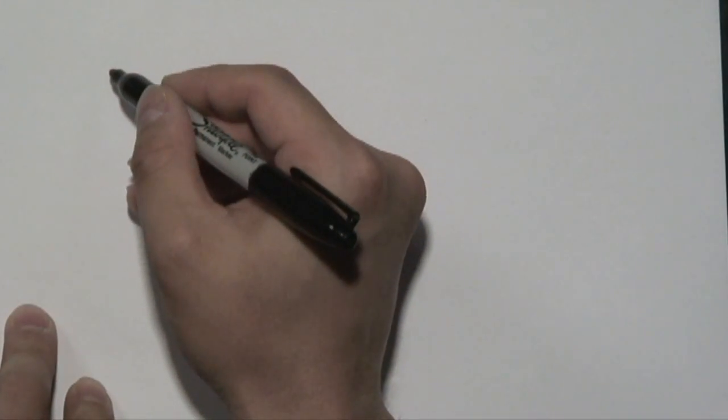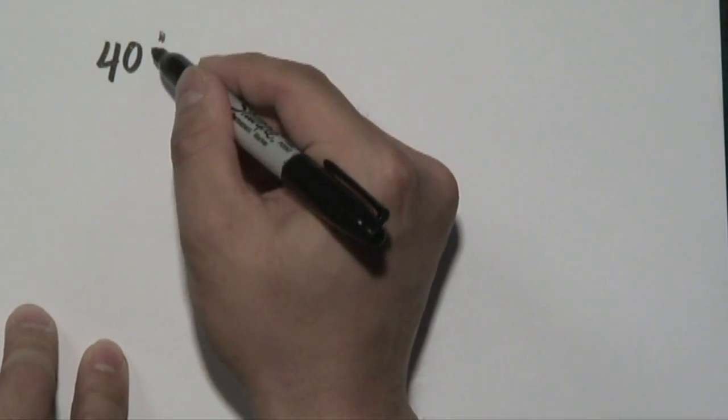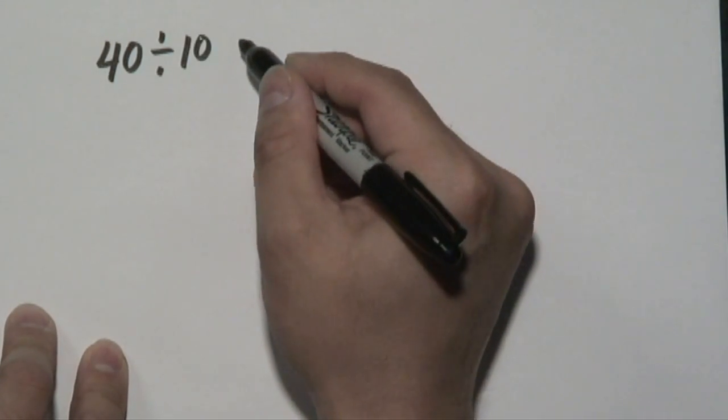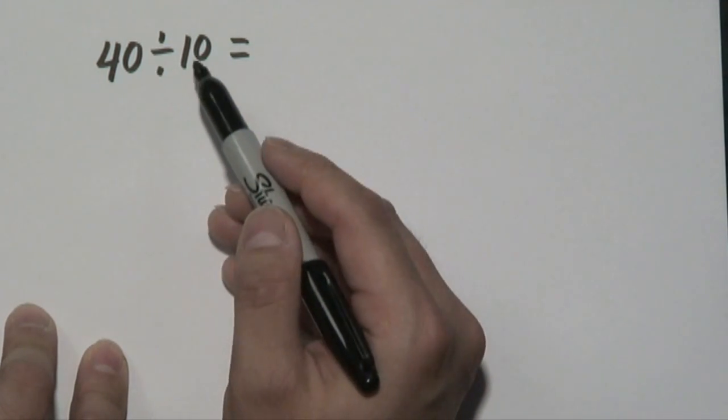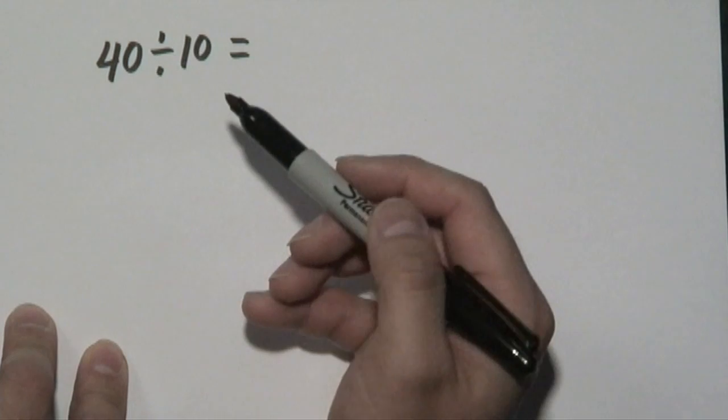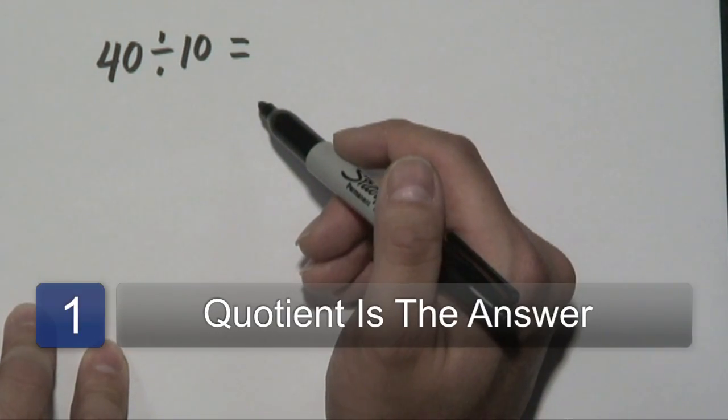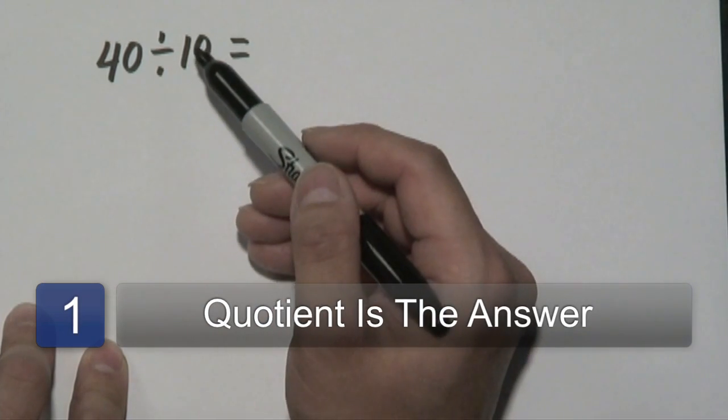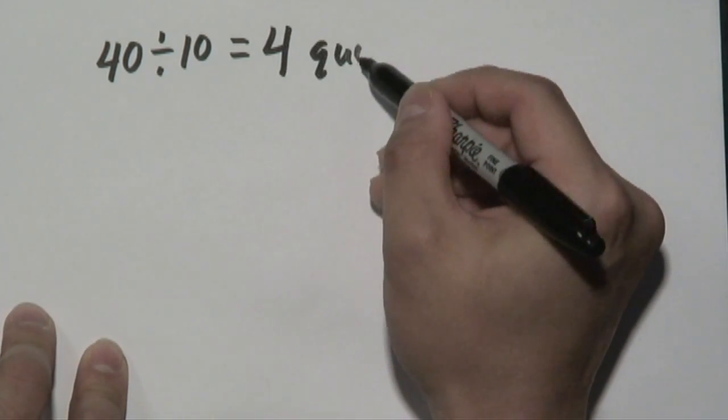Now in some examples, you might have division written this way, 40 divided by 10. Now the first number mentioned is known as the dividend, the second number is known as the divisor, but what we're concerned about is the quotient, and the quotient is again the answer that you get when dividing. Now 40 divided by 10 is going to be 4, and that is what your quotient is going to be.